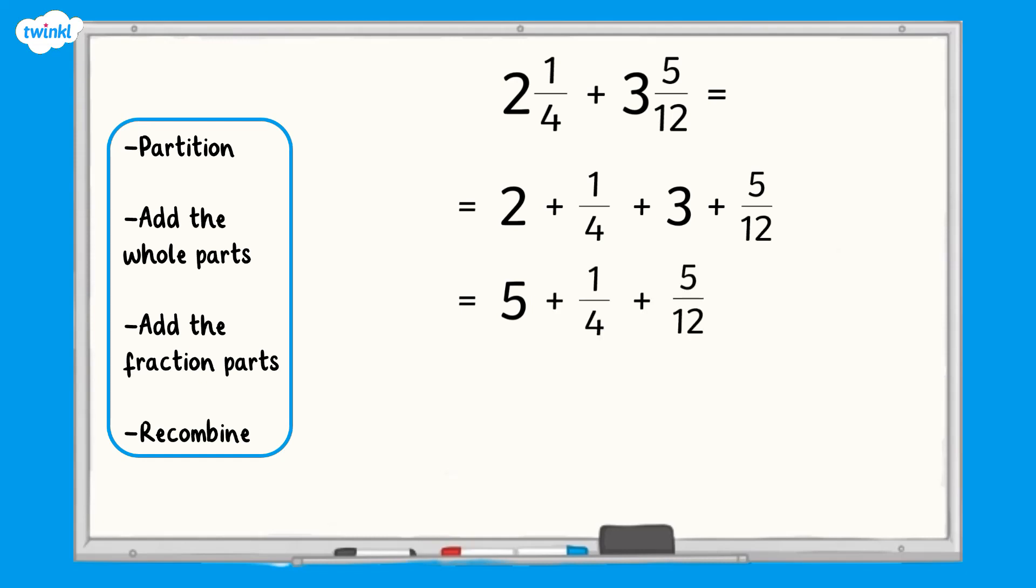Now we need to add the fraction parts. One-quarter add five-twelfths. As you can see this time the fractions do not have a common denominator. We need one-quarter and five-twelfths to have the same denominator. The lowest common denominator is twelve so we need to find the equivalent fraction in twelfths of one-quarter. One-quarter equals three-twelfths.